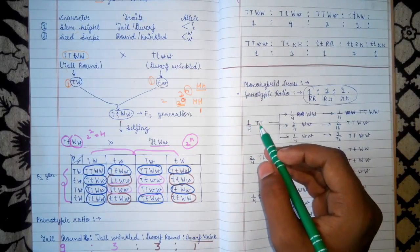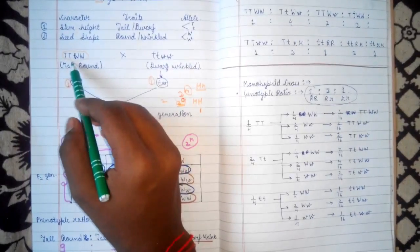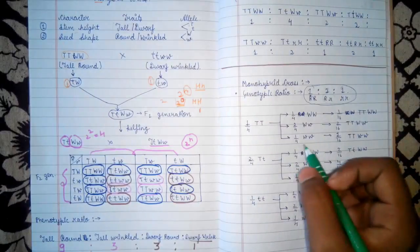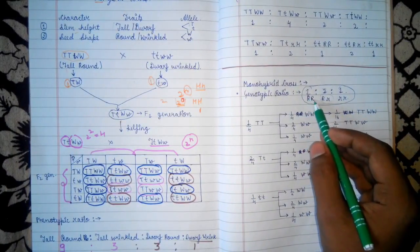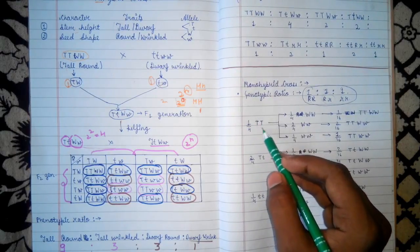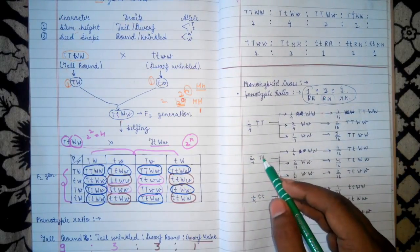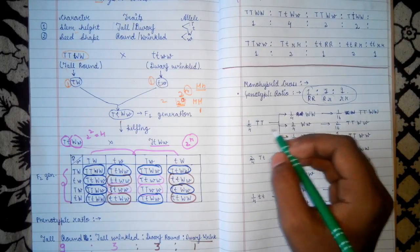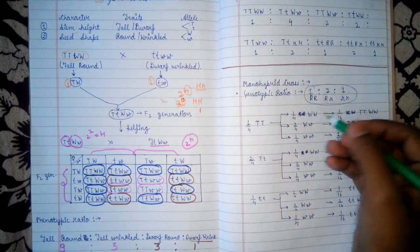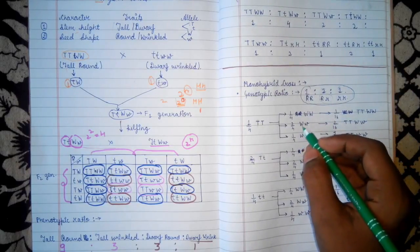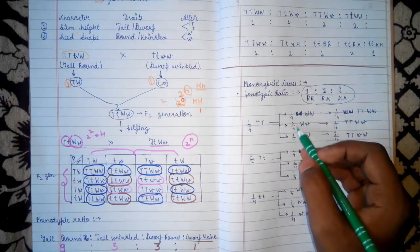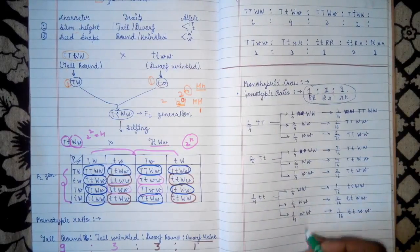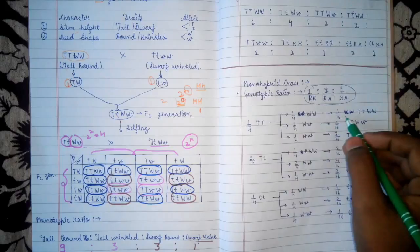Here we take capital T capital T for tall and small t small t for dwarf. So 1/4 capital T capital T, 2/4 capital T small t, and 1/4 small t small t. For 1/4 capital T capital T, we write 1/4 capital W capital W, 2/4 capital W small w, and 1/4 small w small w. We write the same distribution for 2/4 capital T small t and for 1/4 small t small t as well, and now we will multiply these.